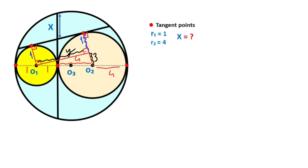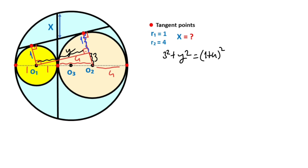Let's call this side y units. For this triangle, if we apply the Pythagorean theorem, we get the value of y. So three squared plus y squared equals one plus four, whole squared. Therefore nine plus y squared equals 25, so y squared equals 16, therefore y equals four units.